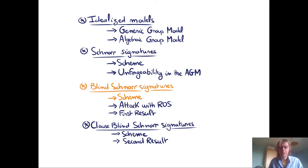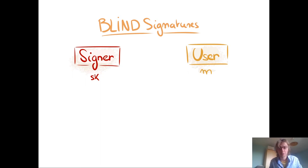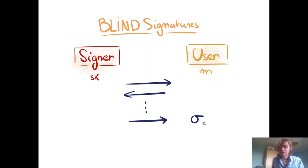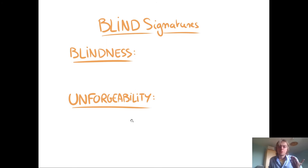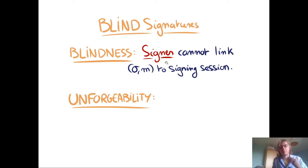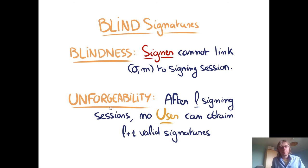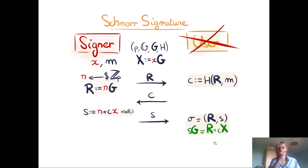Now let's look at Blind Schnorr signatures. In a blind signature protocol, a signer has a secret key and a user wants a signature on message M. After a few interactions, the user obtains a valid signature. The two main security properties are blindness — the signer cannot link a message-signature pair to a signing session — and unforgeability — after L signing sessions, no user can obtain L+1 valid signatures.